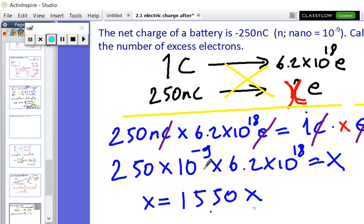That is 250 times 6.2 is 1550, and then I do the powers of 10 by myself. So that's 10 to the power 18, 10 to the power minus 9...